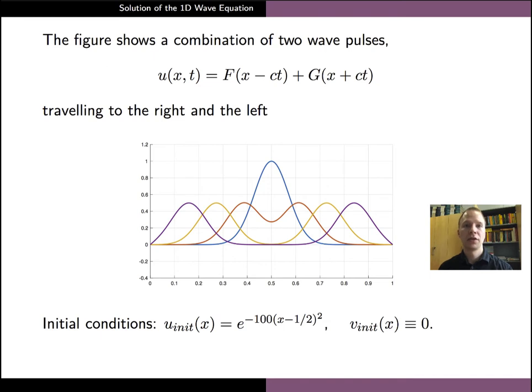The figure on this slide shows a solution of the wave equation arising from a single wave pulse that splits into two waves, one traveling to the left and one traveling to the right. The solution shown here corresponds to the initial profile of the wave pulse with zero initial velocity.